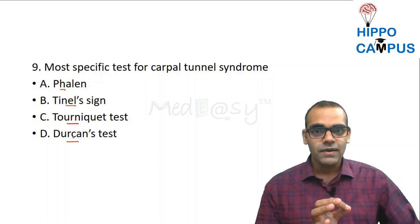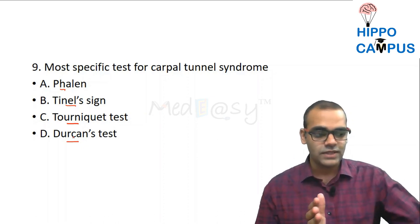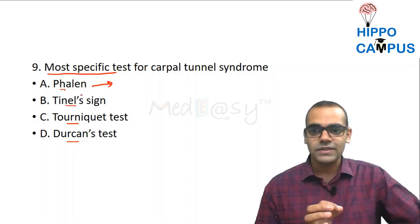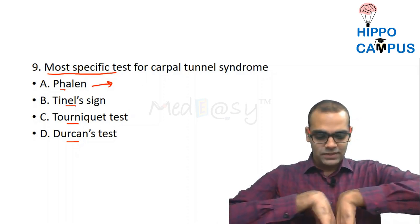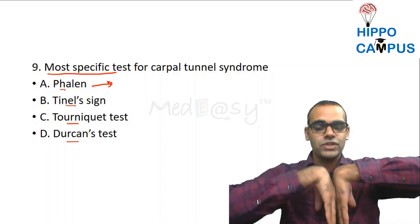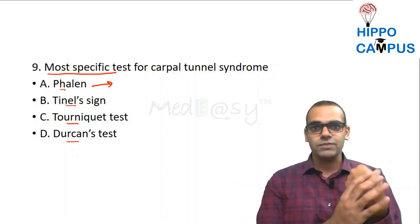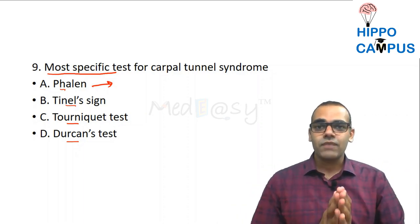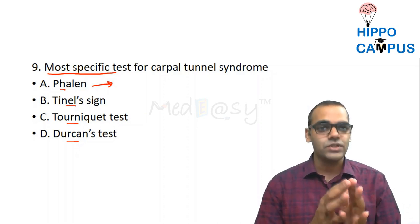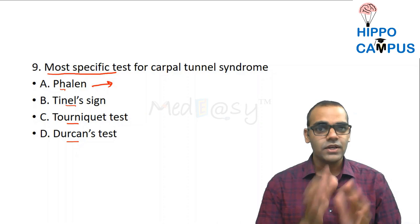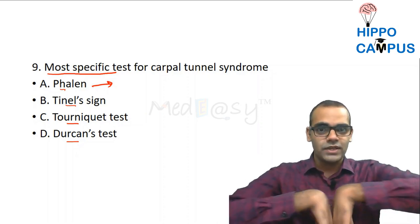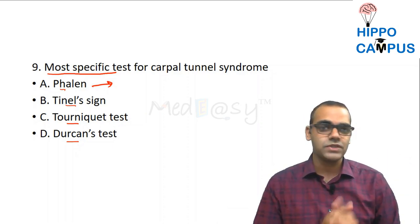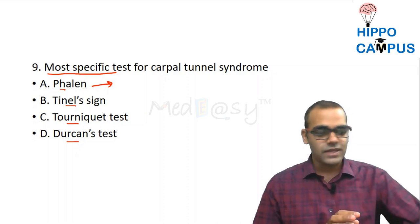Phalen's test: ask the patient to palmar flex the wrist and hold for one minute. This increases compression of the median nerve, producing paresthesia and tingling in the thumb, index, and middle fingers (median nerve distribution). Tinel's sign: percuss along the course of the nerve from distal to proximal — at one point, tapping produces paresthesia along the nerve distribution. Tinel's sign is a sign of nerve regeneration.